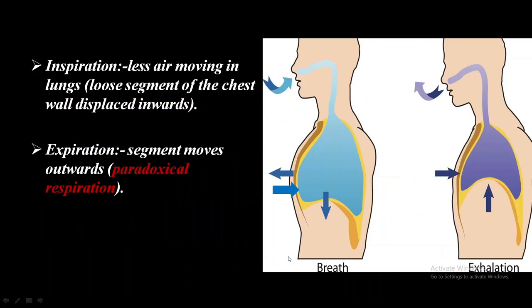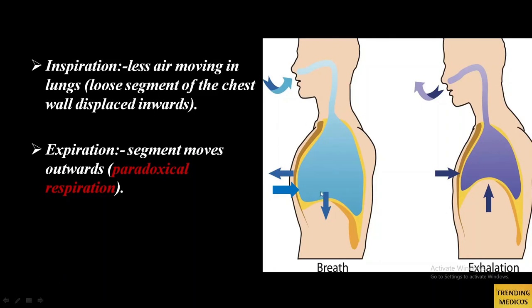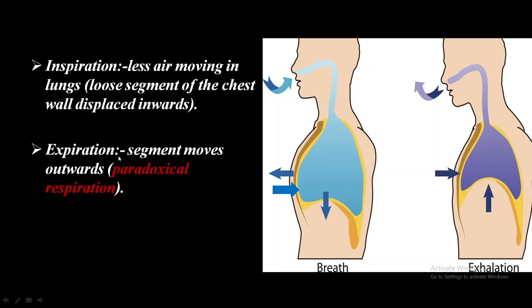The usual association is significant blunt trauma, and the inspiration is paradoxical. During inspiration, the loose segment of the chest wall displaces inward while the rest of the chest moves out. During expiration, the segment moves outward — hence the respiration is paradoxical.